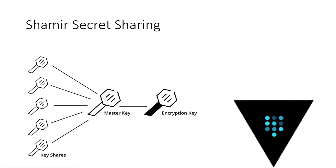You might have seen this analogy in movies — when a submarine captain says to launch a missile, you see one guy plug in his key and turn it, a second guy plugs in his key, a third guy plugs in his key, and all three keys must match before the missile actually launches. That's basically the same analogy that Shamir's Secret Sharing uses.